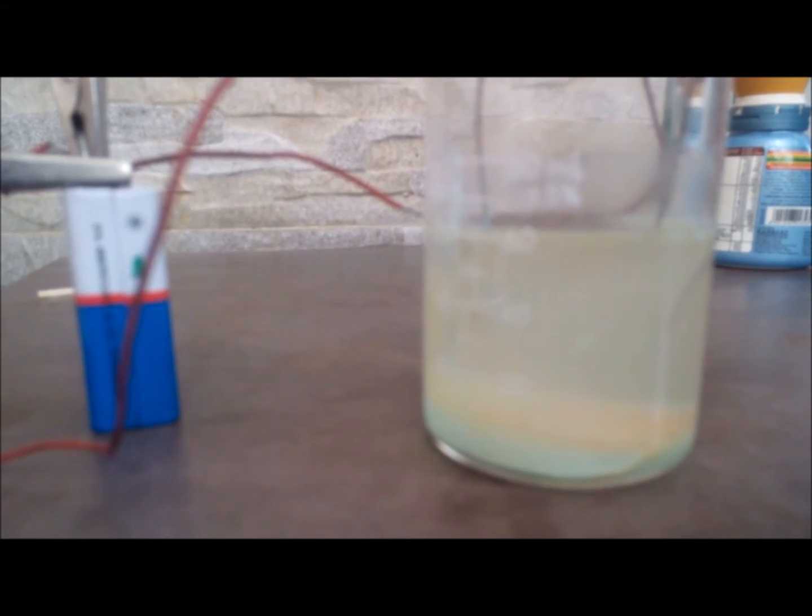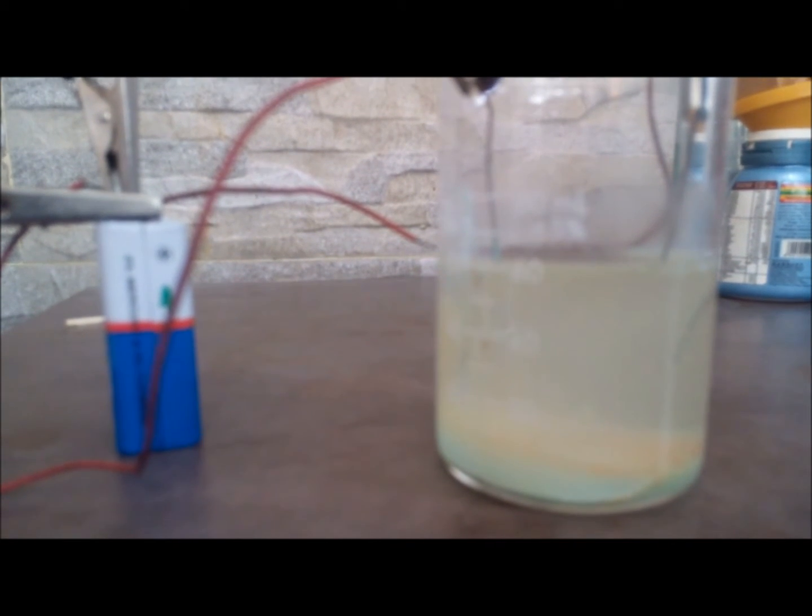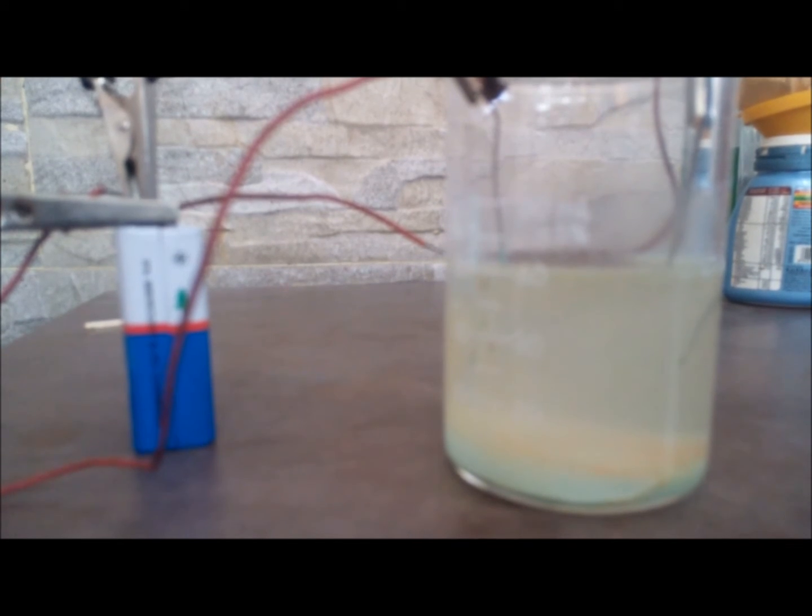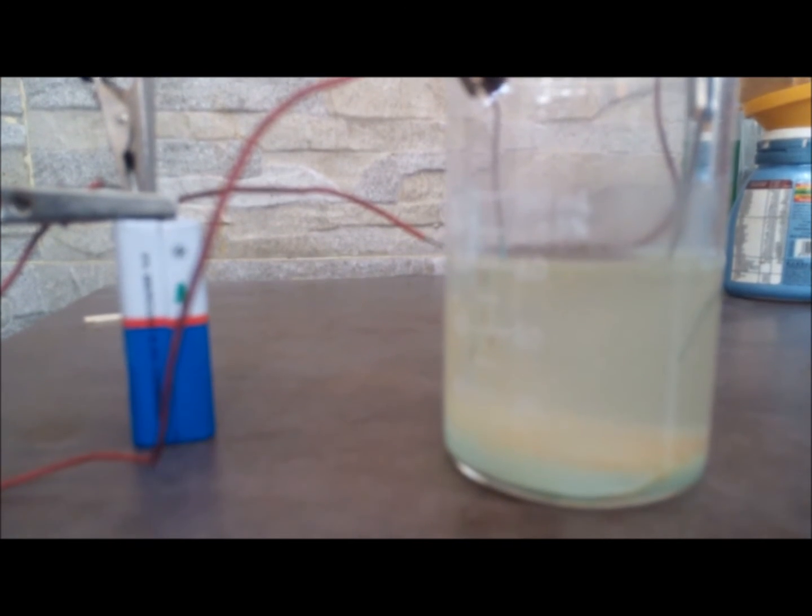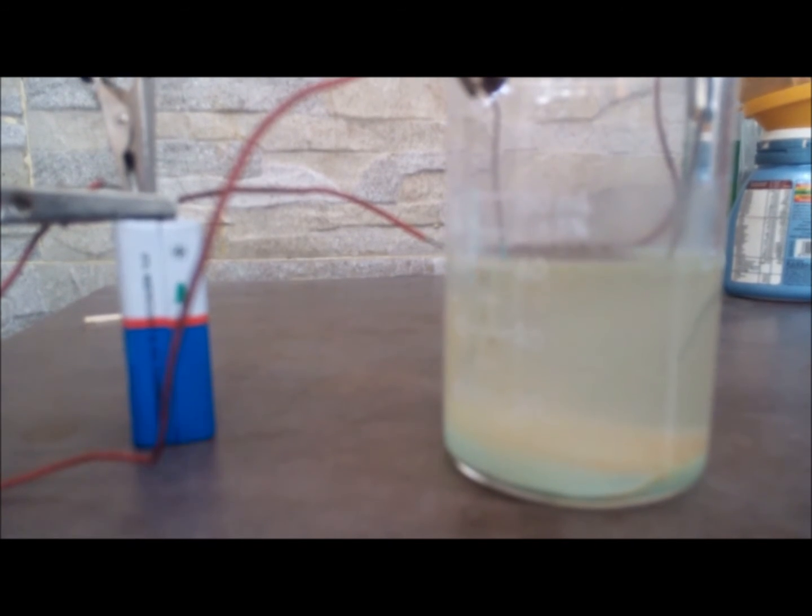Now CuO has been formed. But why has this taken place? The amounts that I have taken are non stoichiometric. So initially cupric hydroxide was being formed as copper was being oxidized to cupric ion.